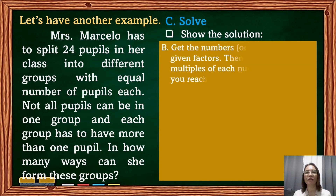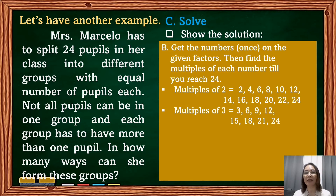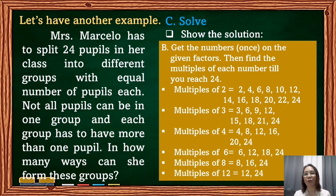Another way to solve this problem is to list the multiples of each factor until we reach 24. Multiples of 2: 2, 4, 6, 8, 10, 12, 14, 16, 18, 20, 22, 24. Multiples of 3: 3, 6, 9, 12, 15, 18, 21, 24. Multiples of 4: 4, 8, 12, 16, 20, 24. Multiples of 6: 6, 12, 18, 24. Multiples of 8: 8, 16, 24. Multiples of 12: 12 and 24. Those are the multiples of each given factor until we reach 24.